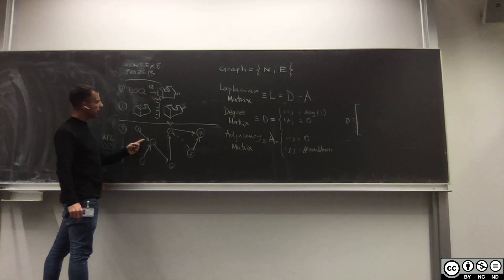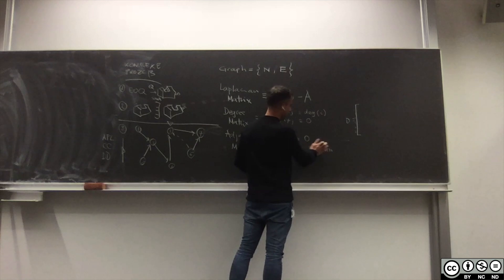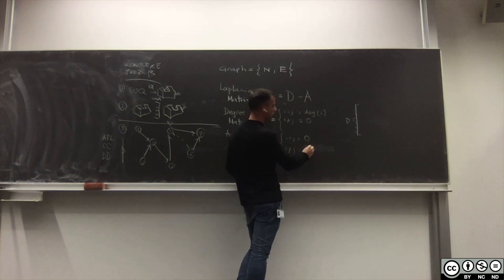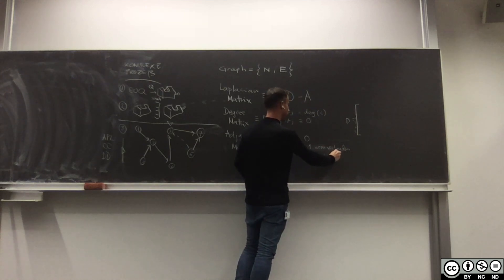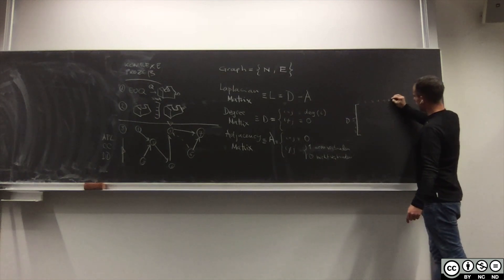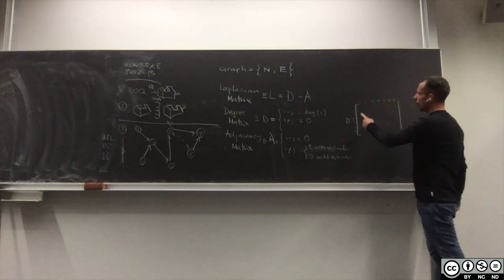Der Degree von - nein sind nicht die Anzahl Nachbarn das ist falsch. Wenn I ungleich J gibt es zwei Möglichkeiten: gibt es eine Beziehung dann ein 1 wenn verbunden und ein 0 wenn nicht verbunden.